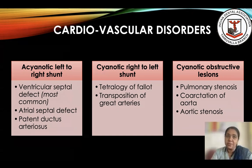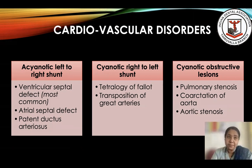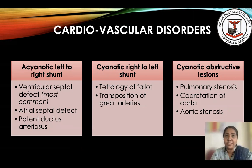The acyanotic shunt diseases include ventricular septal defect, atrial septal defects, and patent ductus arteriosus. In most of these patients it is an acyanotic condition, which means you may not really see a lot of differences when you see the patient, but the parent will clearly give you a history.